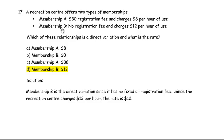So membership B is a direct variation, and the rate is the amount you pay per hour — $12 per hour of use is the rate. The answer is D: membership B is a direct variation and the $12 per hour is the rate.